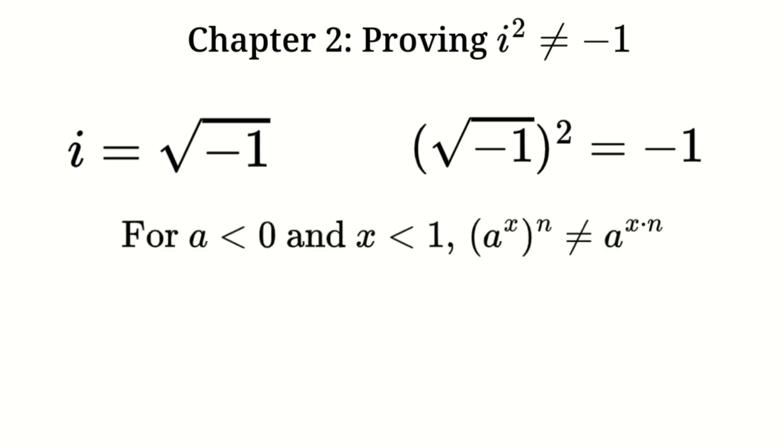Chapter two, proving i squared does not equal negative one. Here's where things get interesting. If we say i equals the square root of negative one, then squaring both sides gives us the square root of negative one squared equals negative one. But wait, can we really cancel the square root with the square?